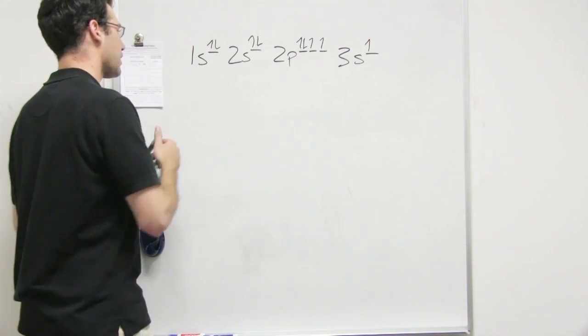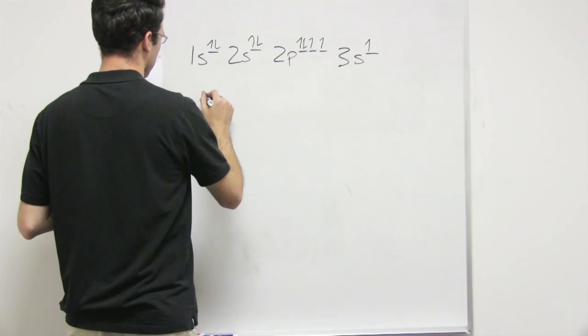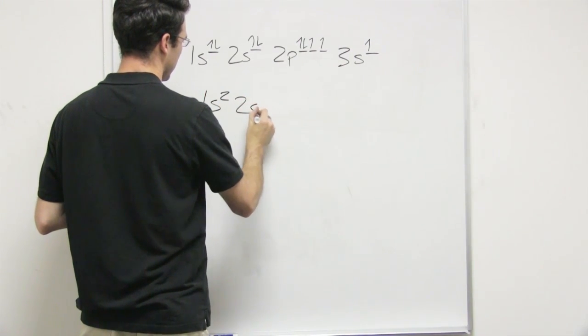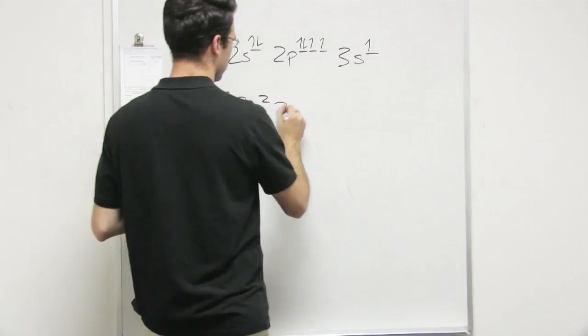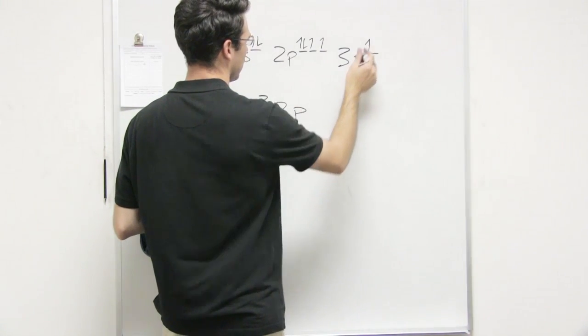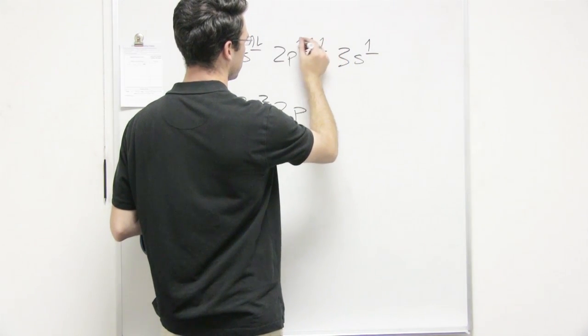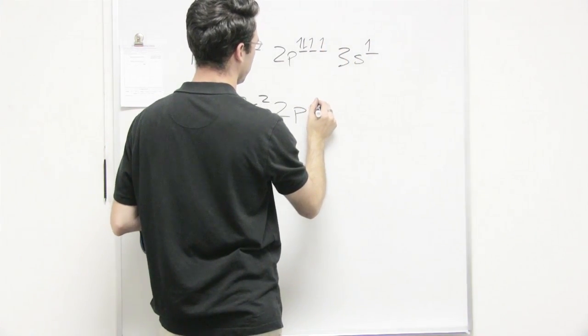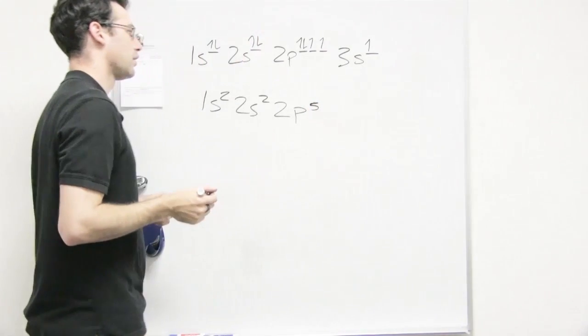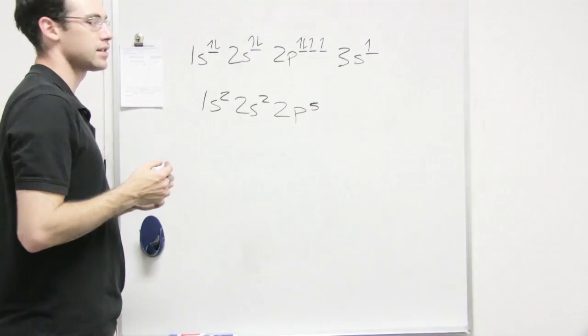So we could say that this guy is in reality 1s2, 2s2, 2p, and we know that this one really belongs there, so instead of 2p4, it should be 2p5, and we leave the 3s empty.